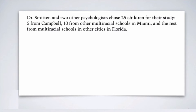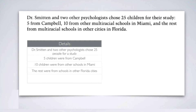First, let's discuss what facts or details we can find in this sentence. We can see that Dr. Smitten and two other psychologists chose 25 people for a study. The next detail is that five children were from Campbell, ten were from other schools in Miami, and the rest were from schools in other cities in Florida. These are the details we can easily find — they are simply written there and we read and understand them.